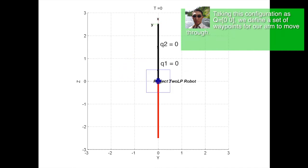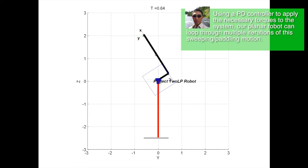Taking this configuration as Q0, we define a set of waypoints for our arm to move through. Using a PD controller to apply the necessary torques to the system, our planar robot can loop through multiple iterations of this sweeping paddling motion.